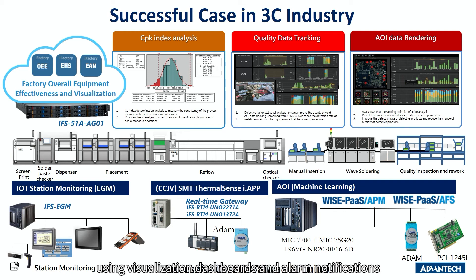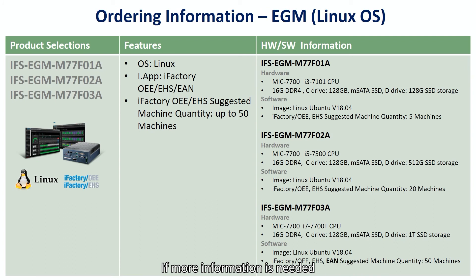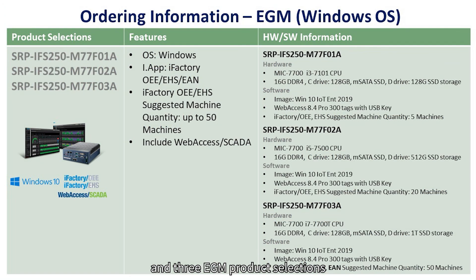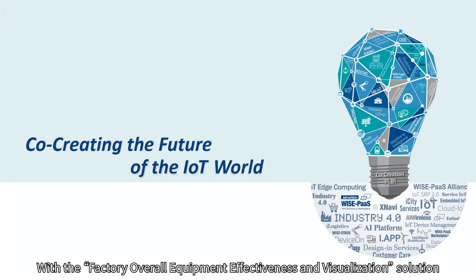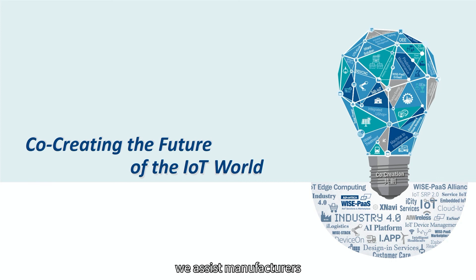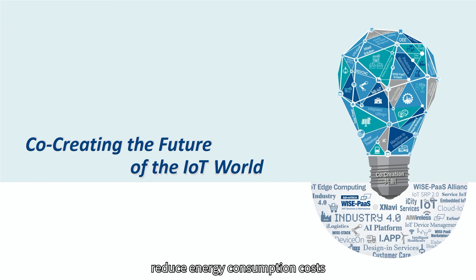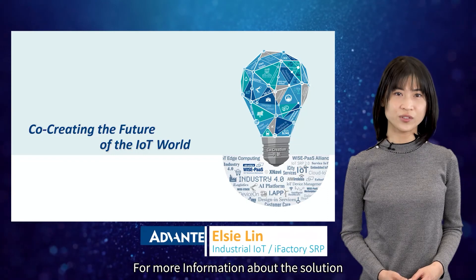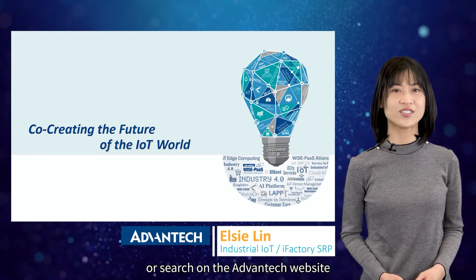If more information is needed, please refer to the ordering information in the documents, which includes three EGN product selections that support Linux operating system and three EGN product selections that support Windows operating system. With the factory overall equipment effectiveness and visualization solution, we assist manufacturers to increase equipment production capacity, reduce energy consumption costs, focus on solving factory operation problems, and increase market competitiveness. For more information about the solution, contact your local sales team or search on the ADVANTECH website.